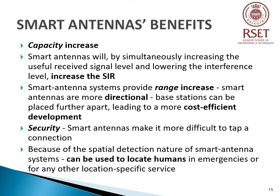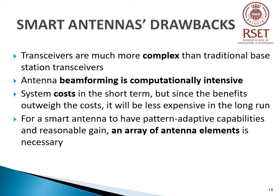Due to the spatial detection nature of smart antennas, they can also be used to locate human beings in emergencies. However, smart antennas do suffer from certain drawbacks: first, the requirement of complex transceivers with separate transceiver chains for each array antenna element; second, antenna beamforming is computationally intensive and requires powerful DSPs, which increases cost; and third, an array of antenna elements is necessary because of the need for reasonable gain.